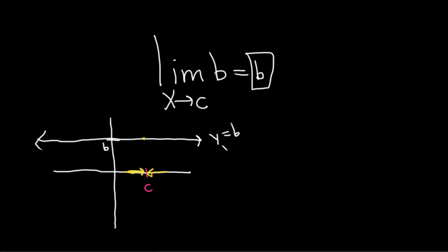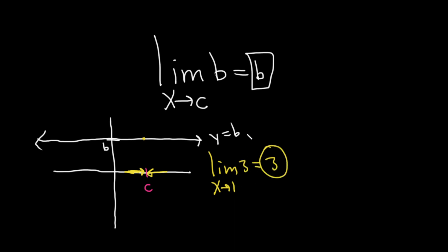The third way to think about it is just to memorize it. Whenever you have a constant, it's just going to be there. For example, the limit as x approaches 1 of 3 is just 3. Really simple. I hope this video has been helpful. Good luck. See you in the next video.